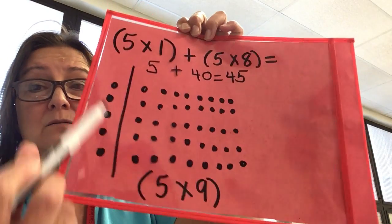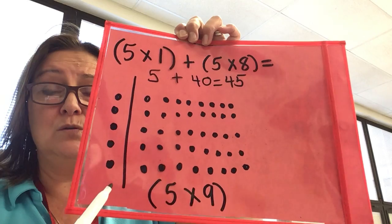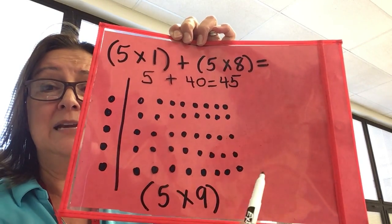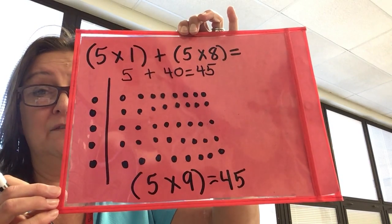Now another way that I could do this is I could look at the whole array. So the whole thing. There are five rows and now there are nine in each row. So I know that nine times, or excuse me, five times nine equals 45.